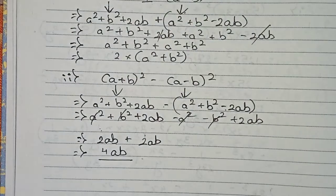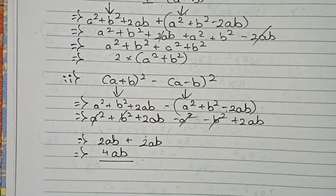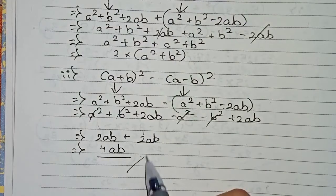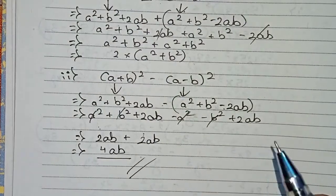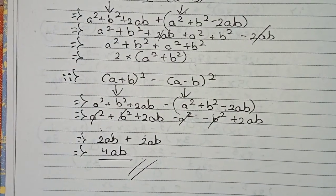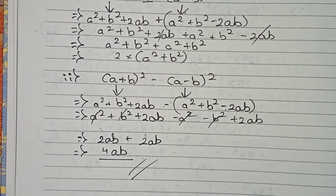So 4ab is the final answer for (a + b)² − (a − b)². Thanks for watching this video — please subscribe to my channel for more solutions.